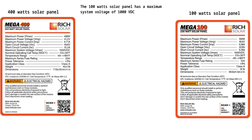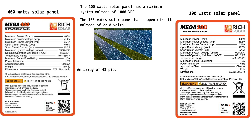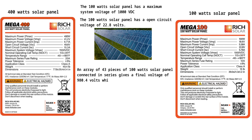This means that while connecting 100-watt solar panels in series to generate higher voltage, the total voltage should not exceed 1000 V. The 100-watt solar panel has an open-circuit voltage of 22.8 V. An array of 43 pieces connected in series gives a final voltage of 980.4 V, which is close to the 1000 V limit. So when connecting 100-watt panels in series, you should not exceed 43 pieces in a single array.